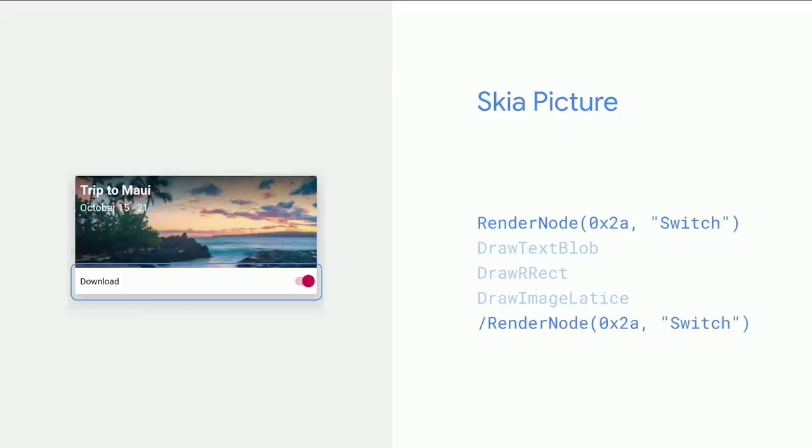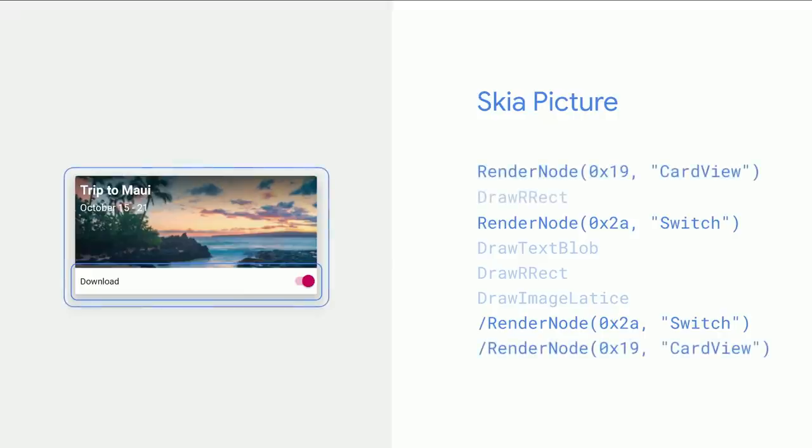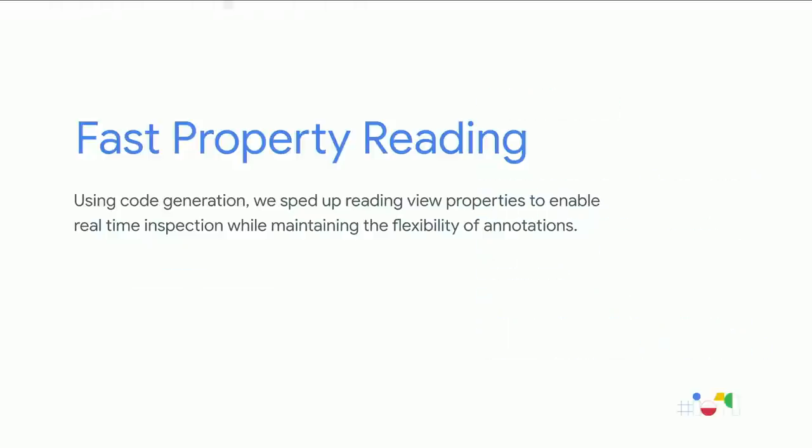Since we have start and stop annotations for render nodes, we have a nested framework similar to HTML that lets us see all the drawing commands that went into building a card view, along with which views they came from. This enables nesting and lets Studio walk through the Skia picture to associate drawing commands back to specific views like the switch view.